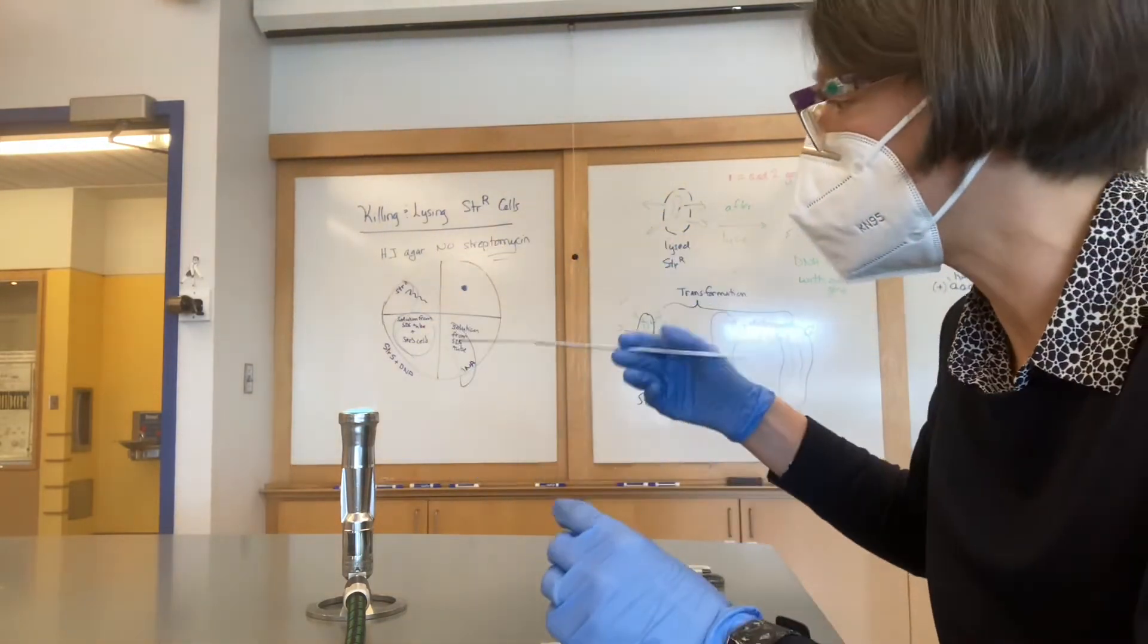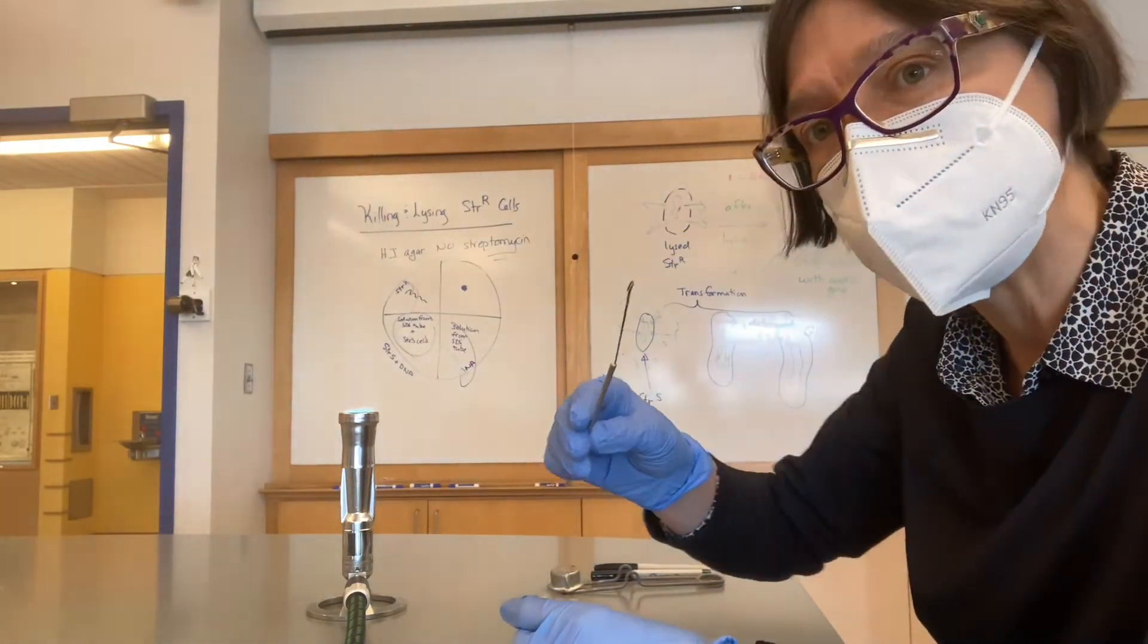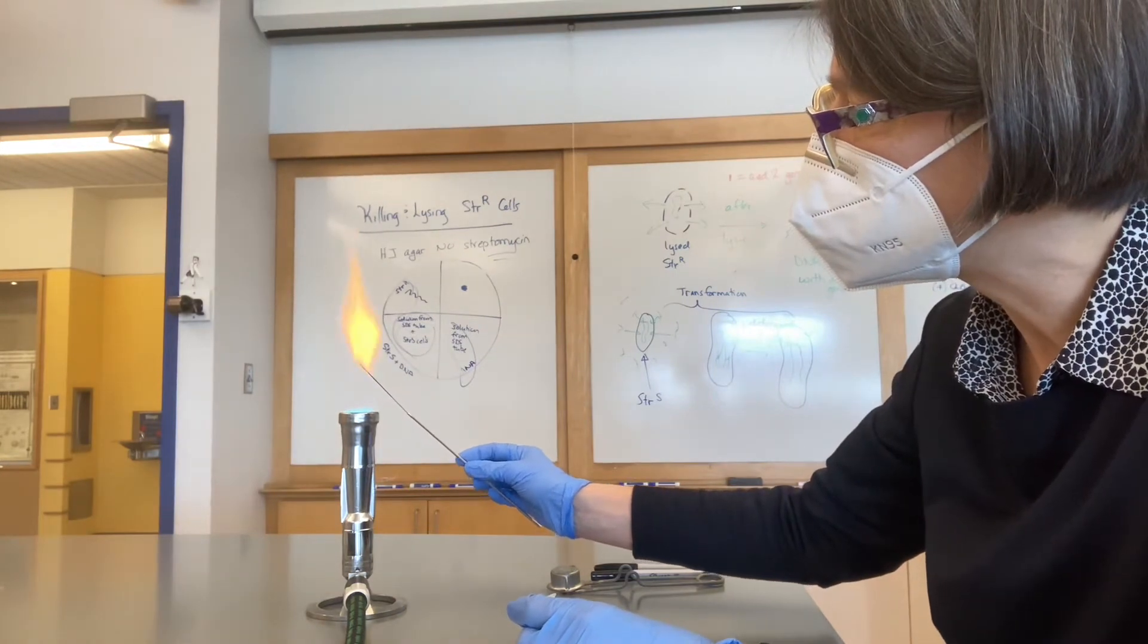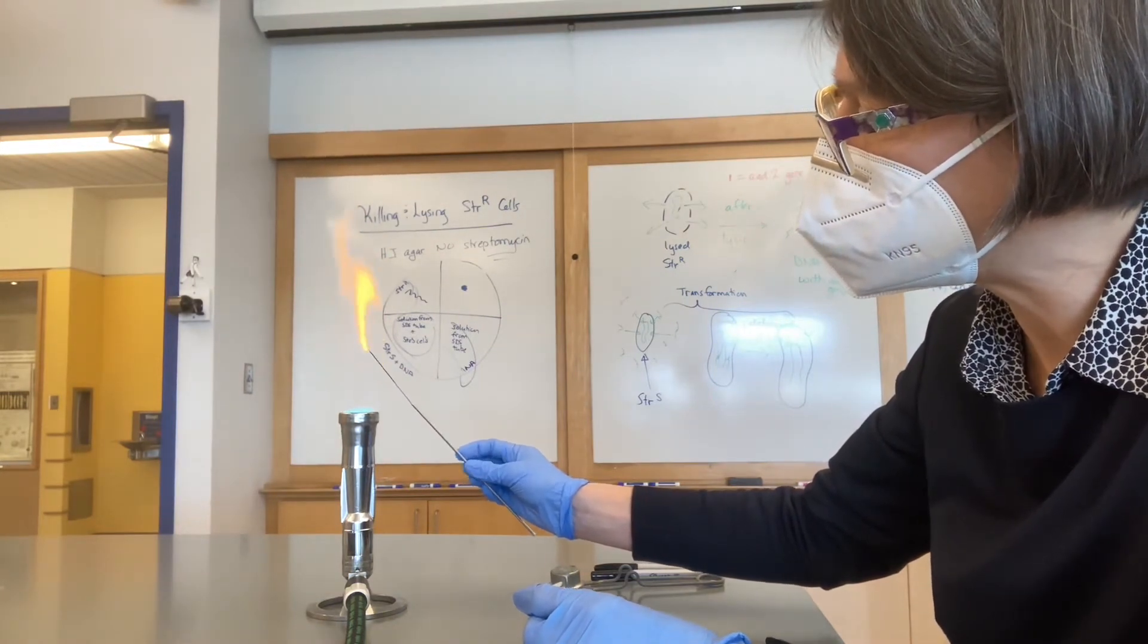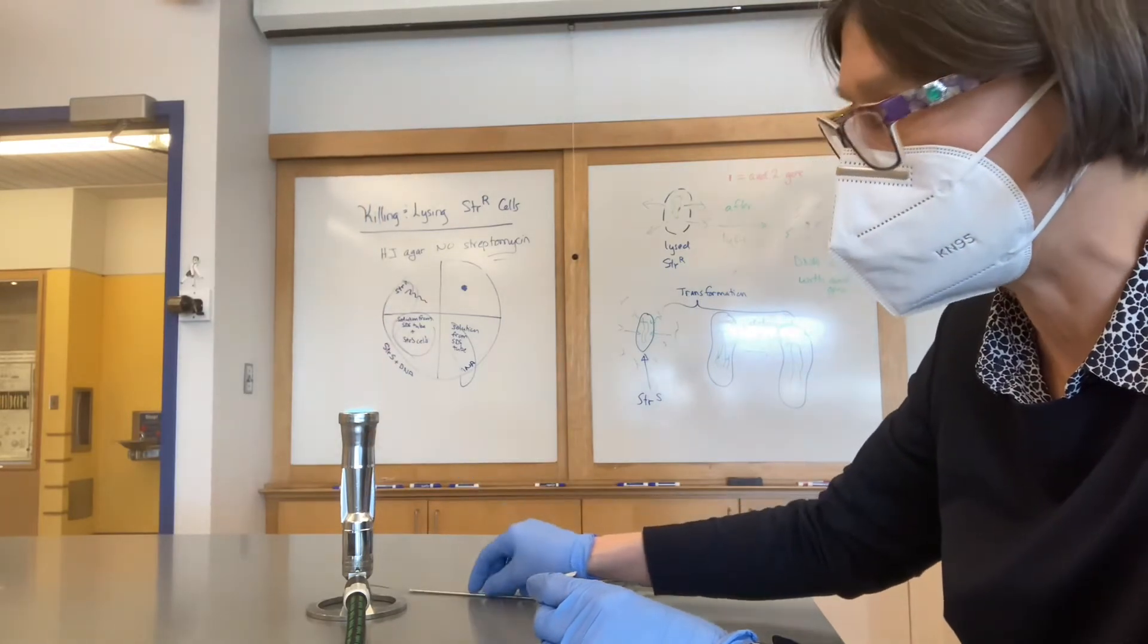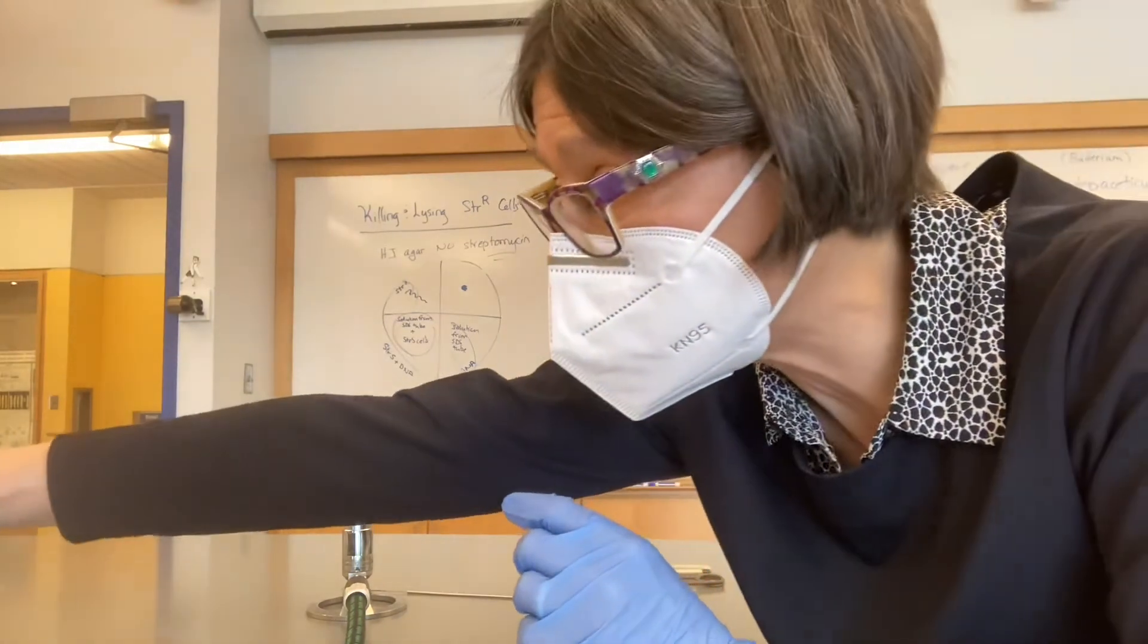I cap the SDS tube, and this is contaminated now, so I flame it. And once it gets red hot, burning off any cells or SDS on the end of it, I can lay that down. I'm going to turn my Bunsen burner off.